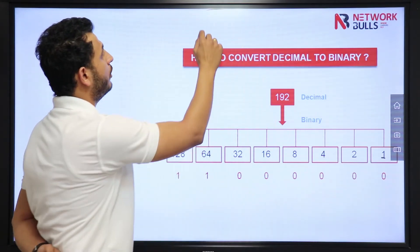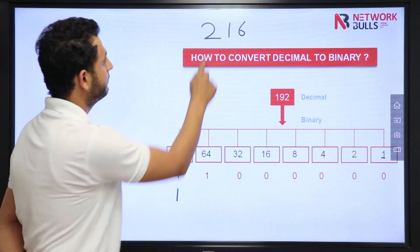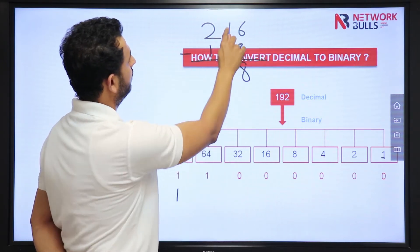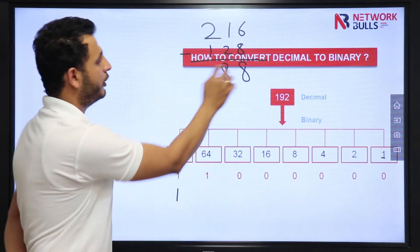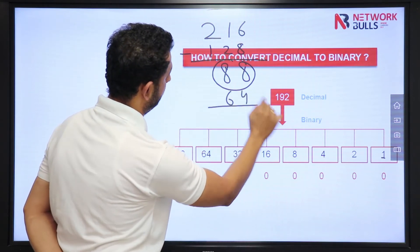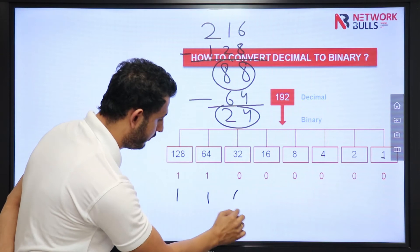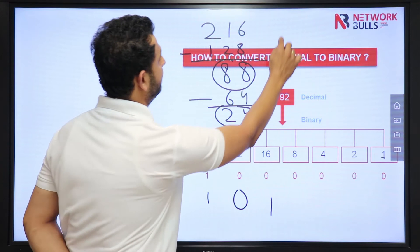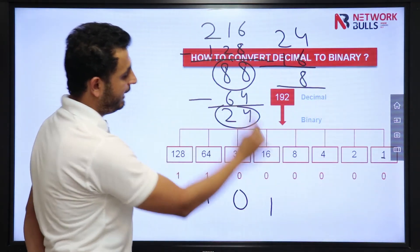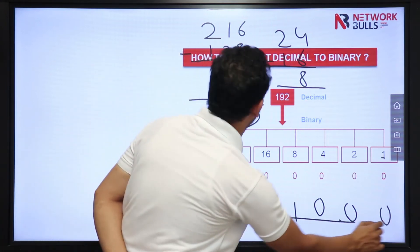Let's take one more example. Let's say you want to write 216. For 216, do you need 128? Yes — this bit will be 1. Subtract 128, and how much more do you need? 88. For 88, do you need 64? Yes — subtract it again. What do you need now? 24. For 24 do you need 32? No. Do you need 16? Yes — subtract 16. What's left? 8. For 8 you need it — yes. So all other bits will be 0. This is the binary representation for the number 216.